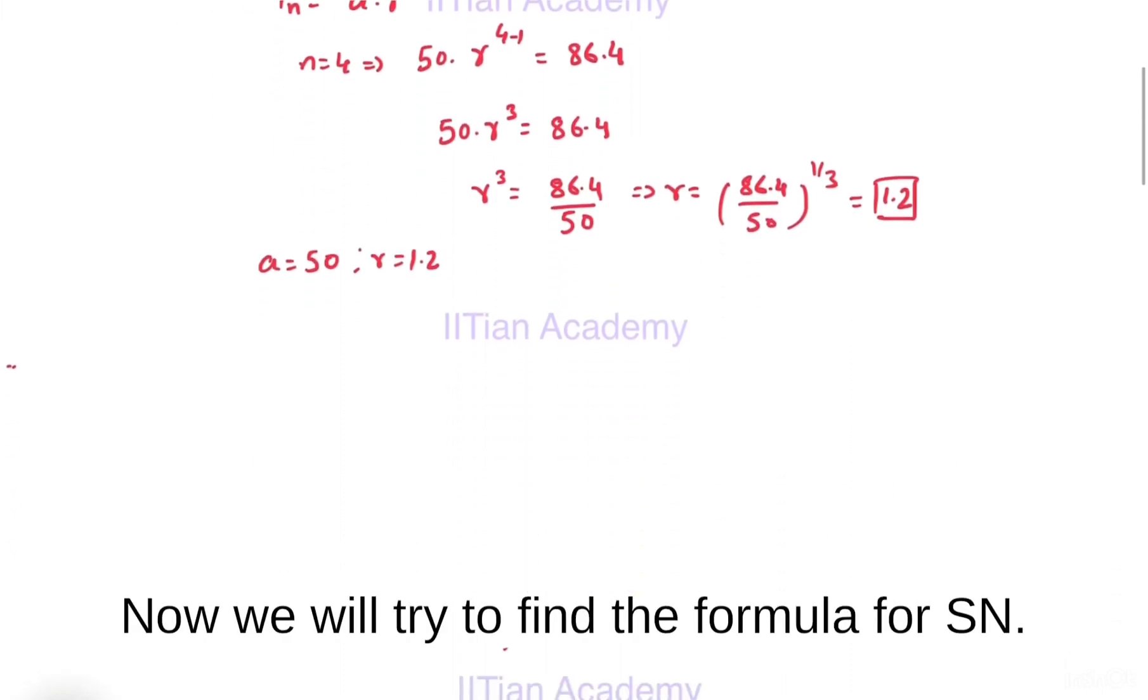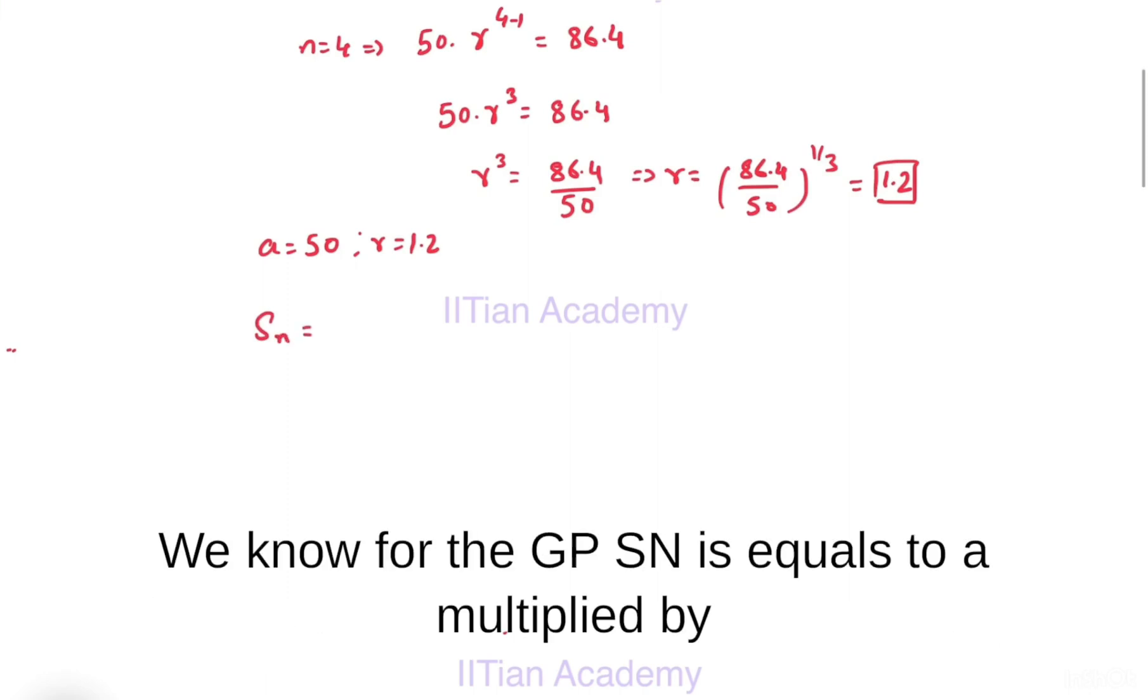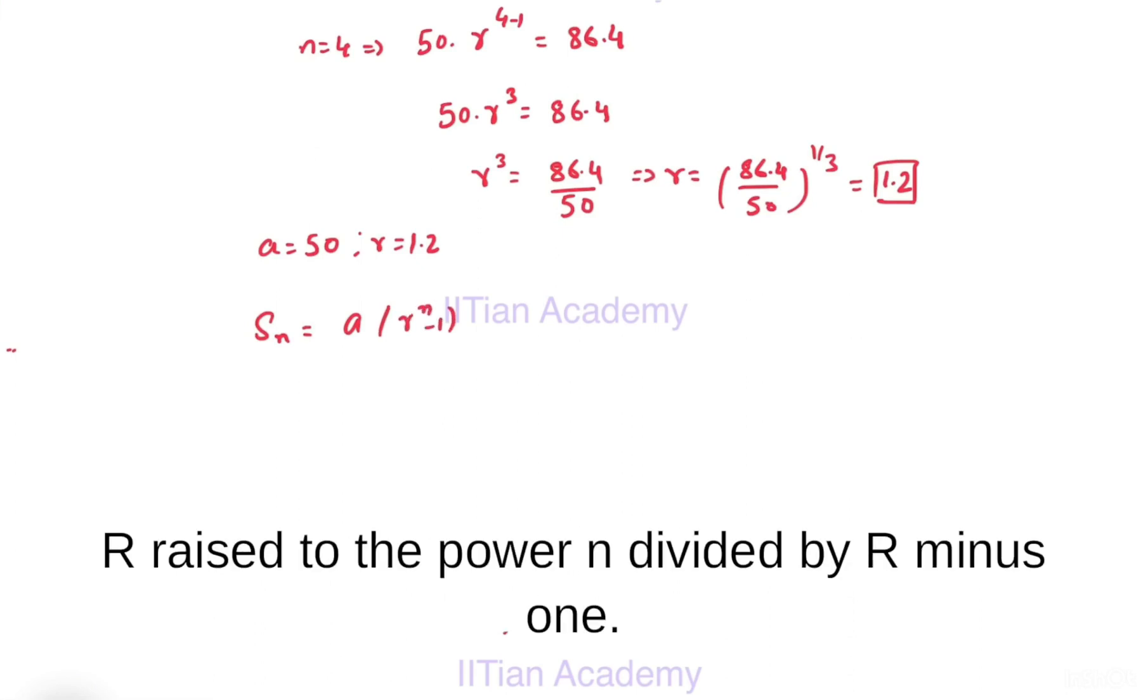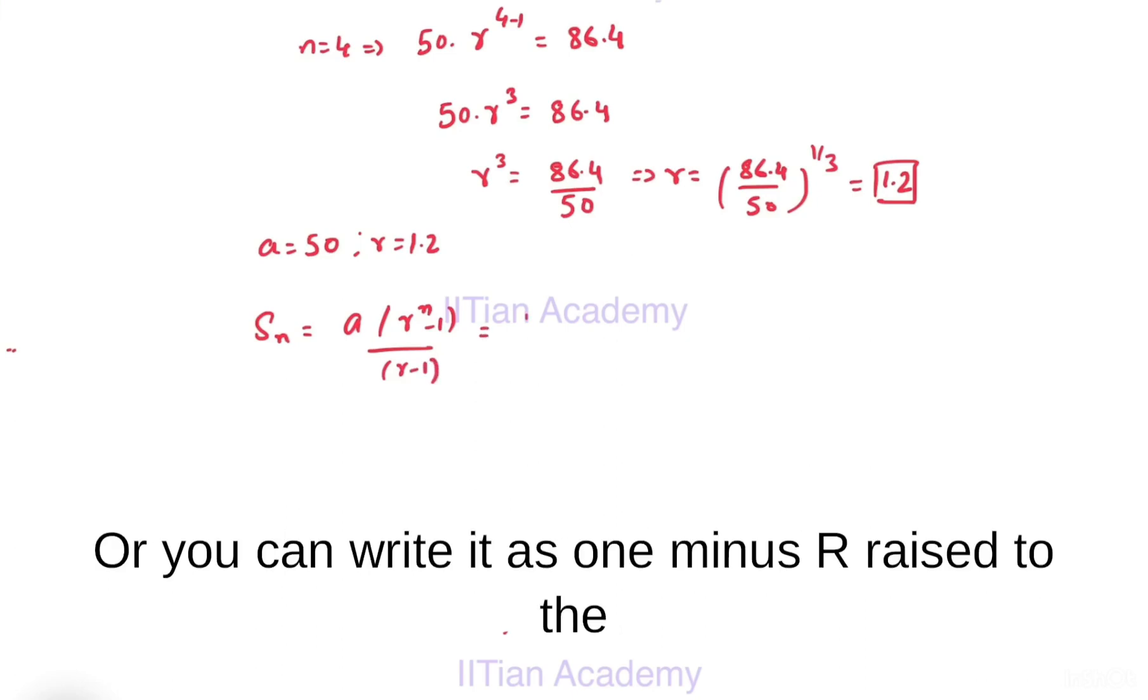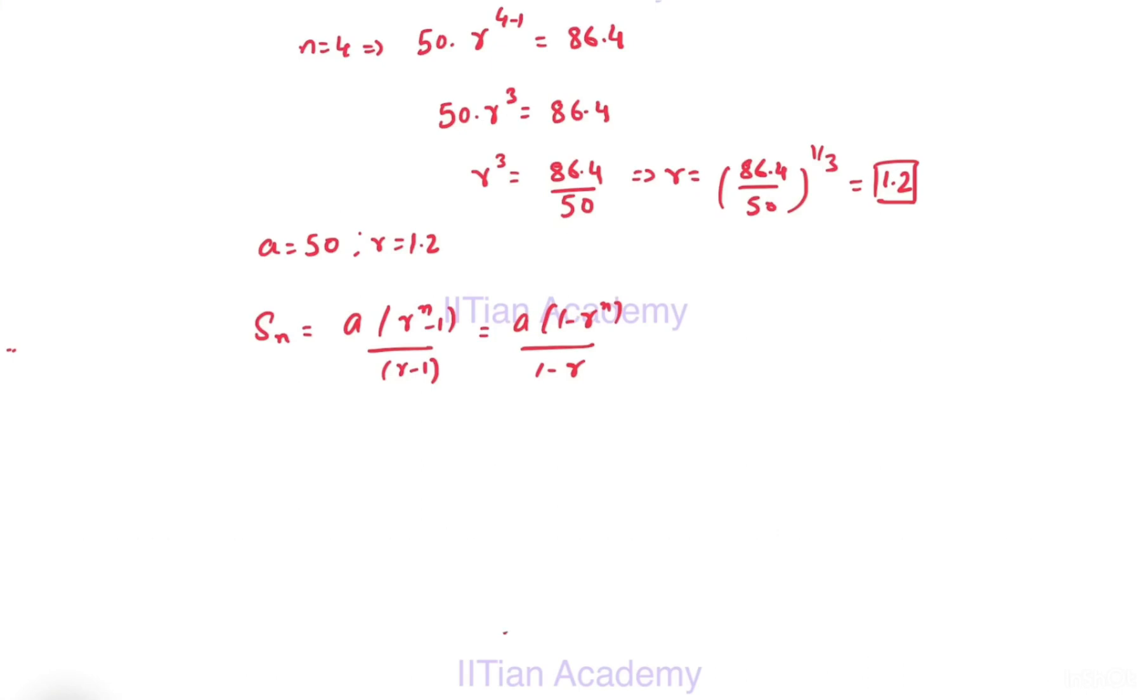Now, we will try to find the formula for Sn. We know for the GP, Sn is equal to a multiplied by r raised to the power n divided by r minus 1, or you can write it as 1 minus r raised to the power n divided by 1 minus r. Both of these are correct.